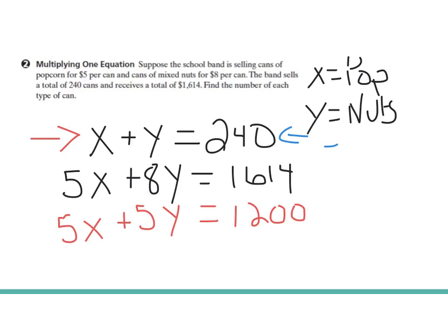So that is going to change the sign of all three of those values. So now when I go to add my columns, 5x minus 5x, I get 0x. That x is eliminated.